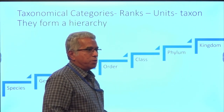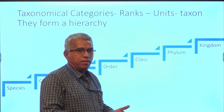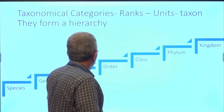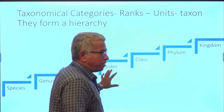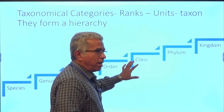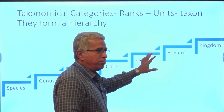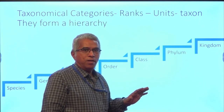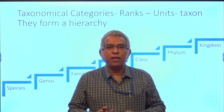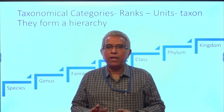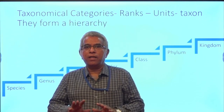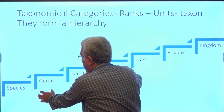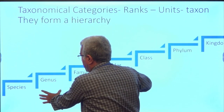So, species, genus, family, order, class, phylum, and kingdom are the seven obligatory taxa available in the taxonomical categories. Now let us try to elaborate.